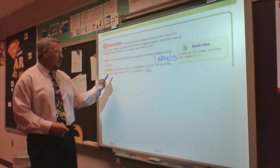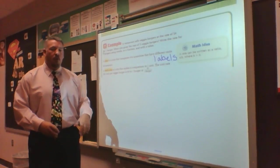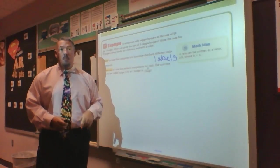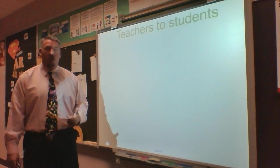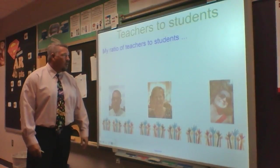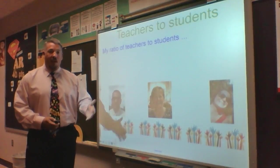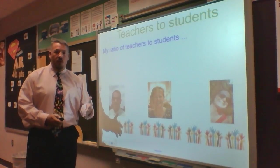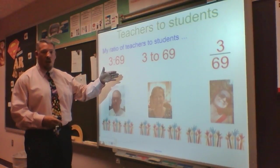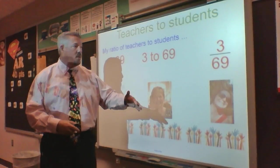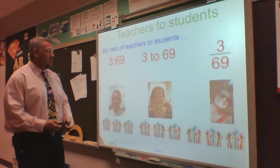A unit rate has the same idea as a rate — two numbers with two different units — but I'm going to reduce it down so that my denominator, my bottom number, is a one. When we talk about rates, let's look at teachers and students. Three teachers, and each has 23 students — 23 times 3 is 69. So in sixth grade, our ratio is 3 to 69. Written with the word, 3 to 69. As a fraction, 3 to 69. Our ratio is just comparing those two different things.